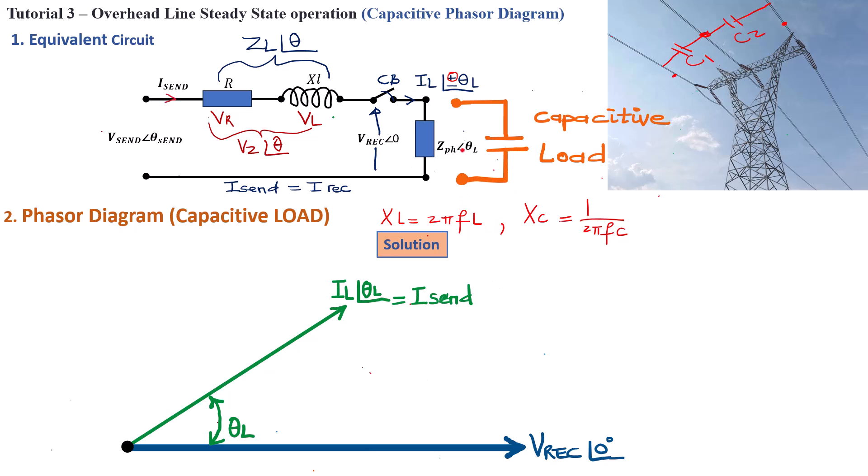Now, once the circuit breaker has been closed and we've got the current that's leading the voltage by an angle, the next thing that will happen, there will be some situation that will start to develop here at the transmission line.